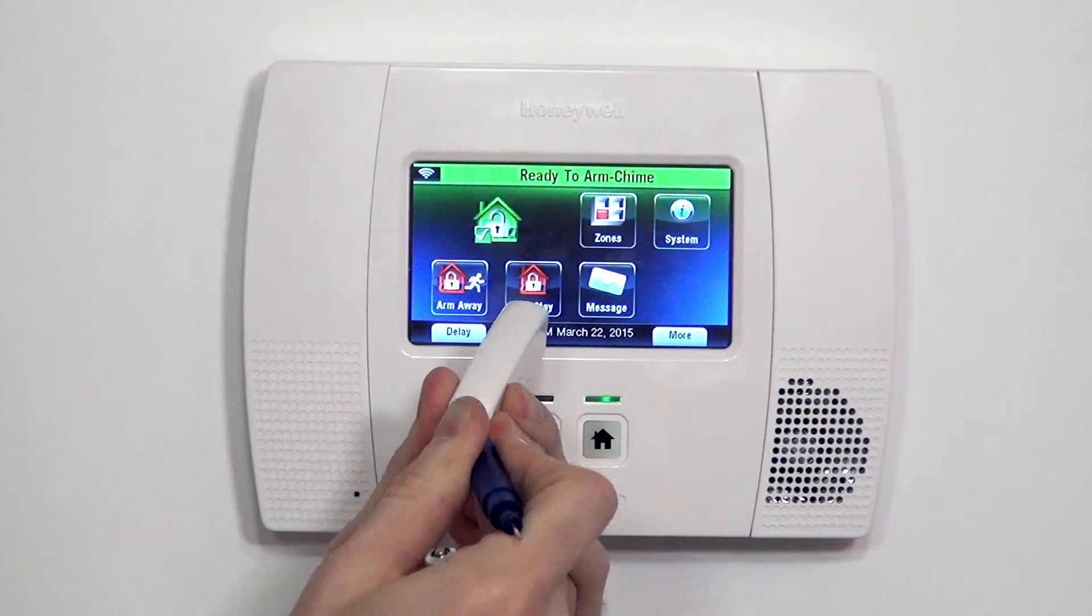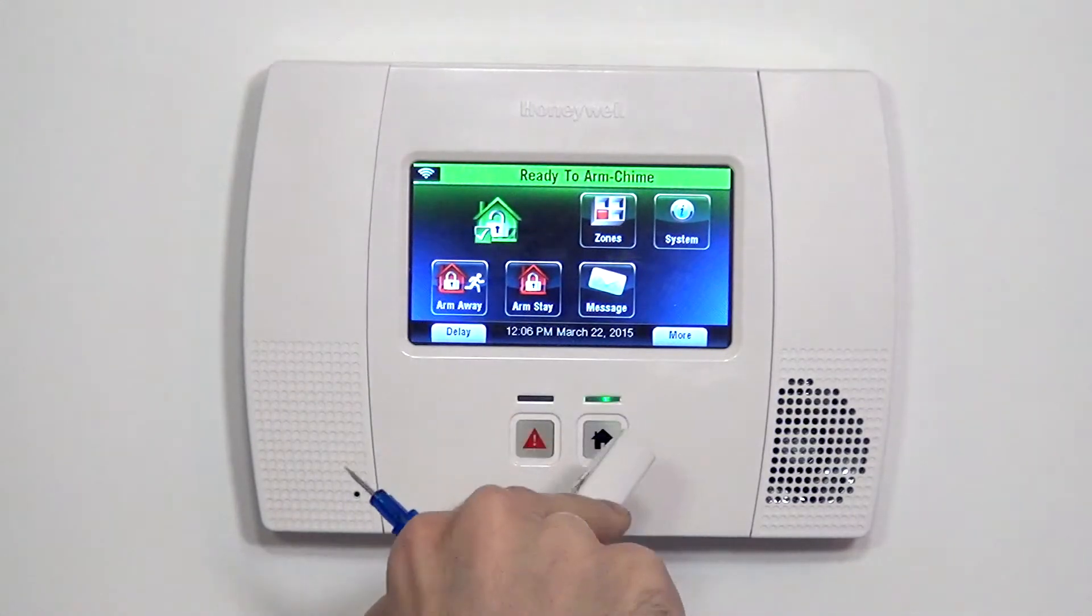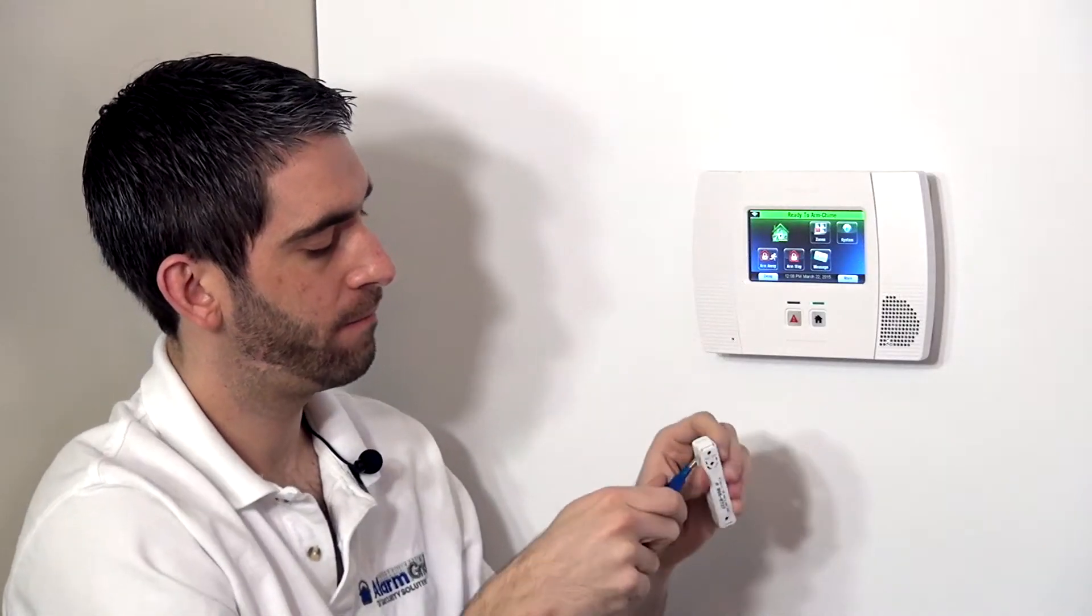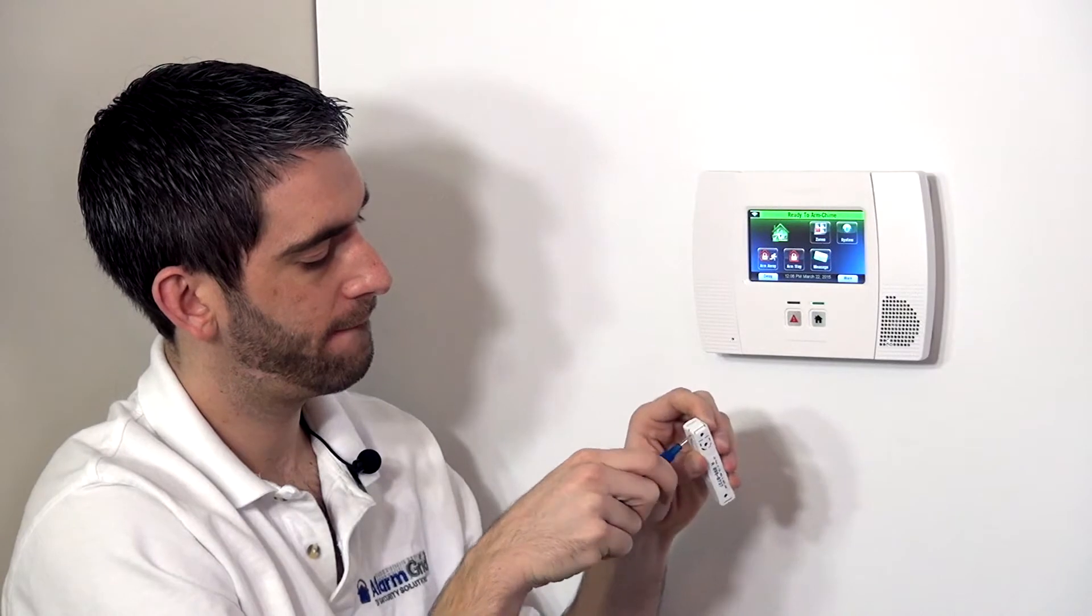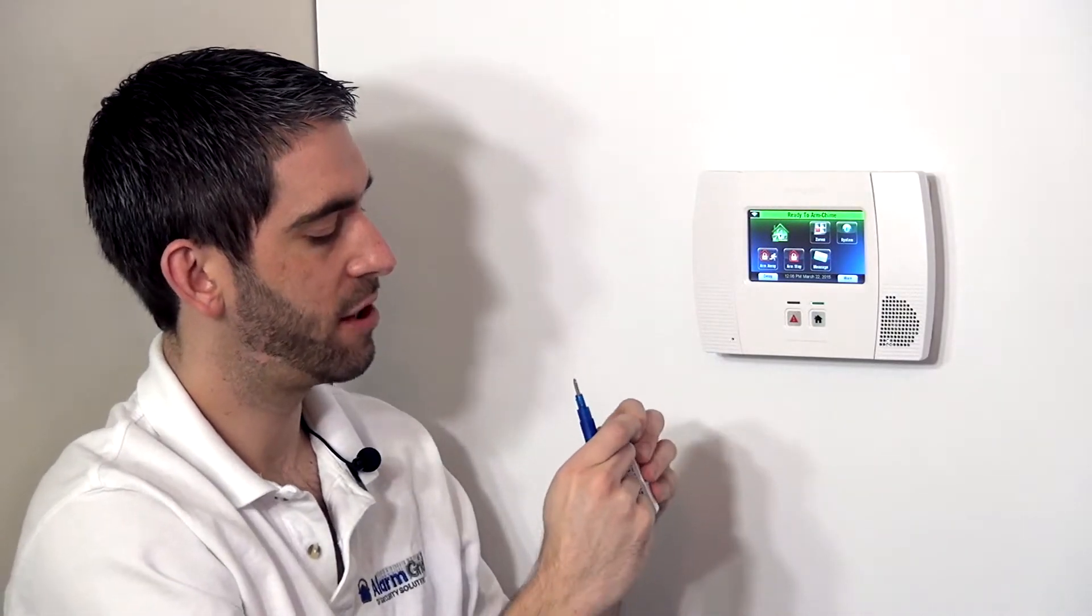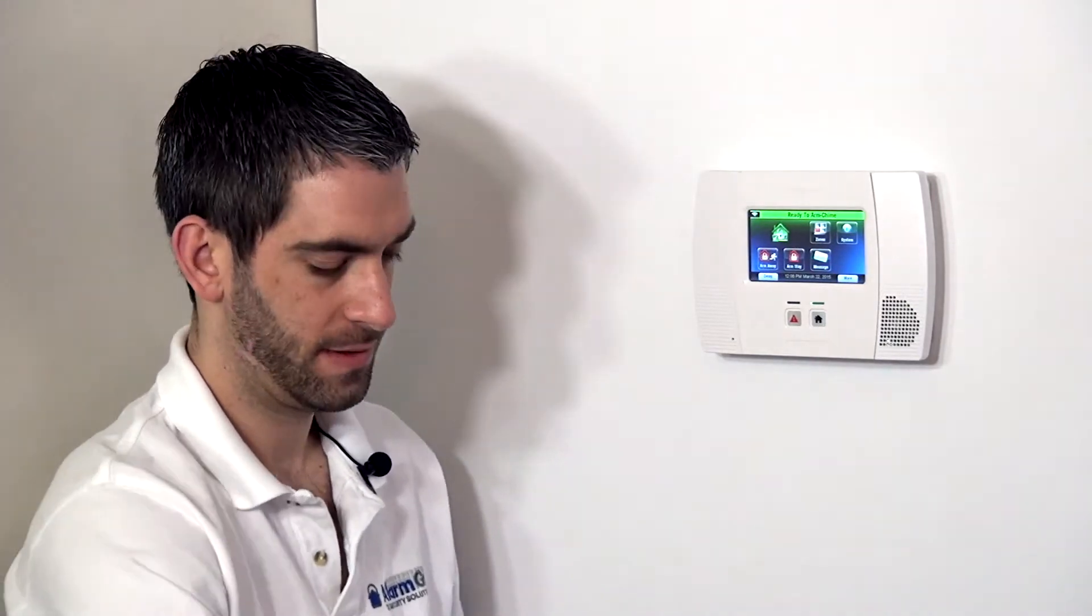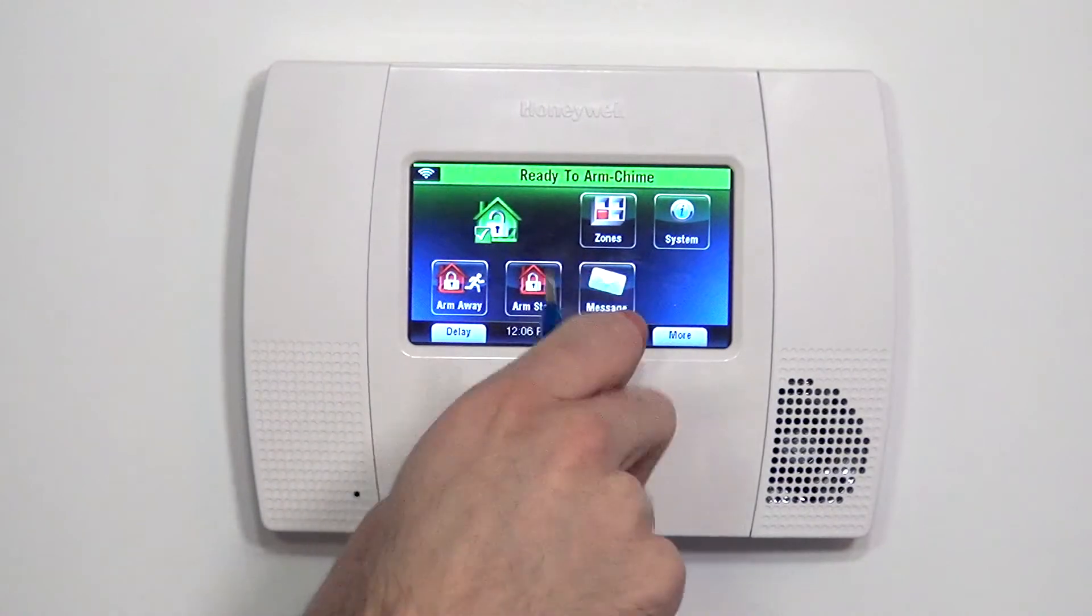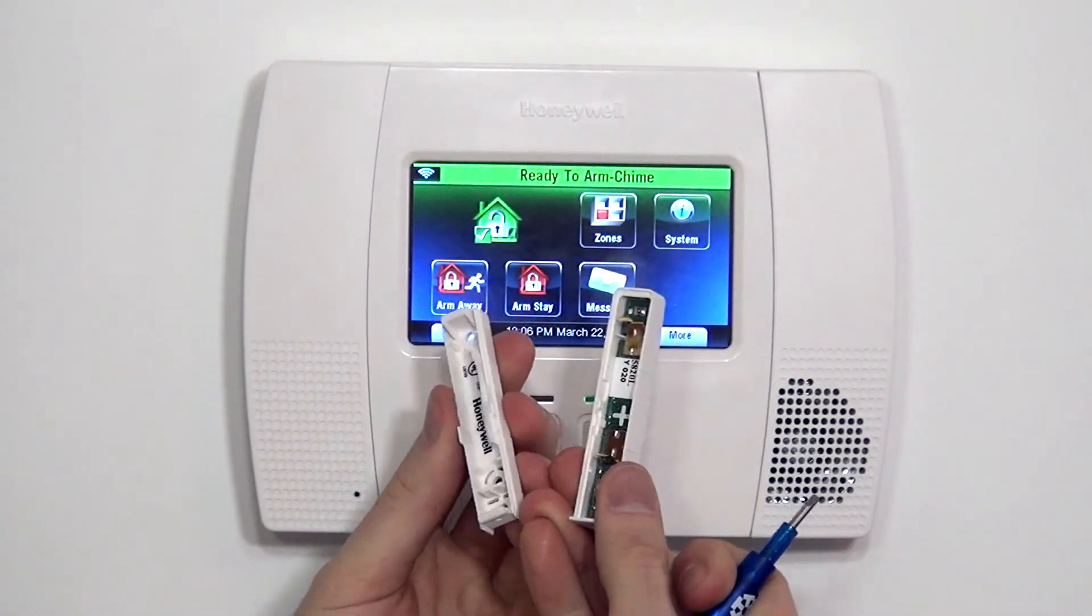We can get to the inside of the sensor so we can insert our battery and give this unit power so we can program it. This tab can be a little tricky, so just pry in and wiggle it until it pops.